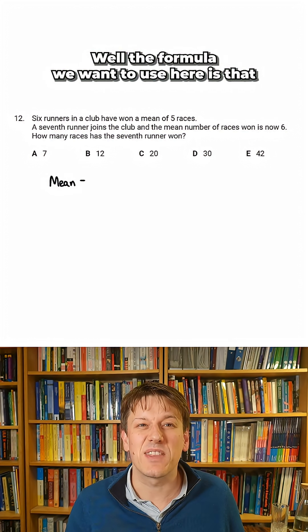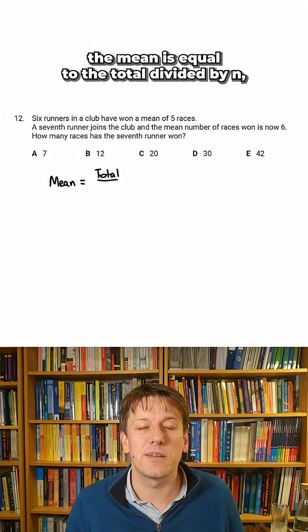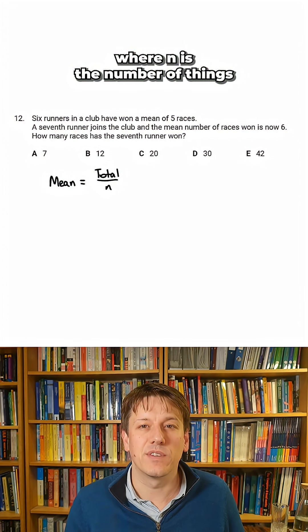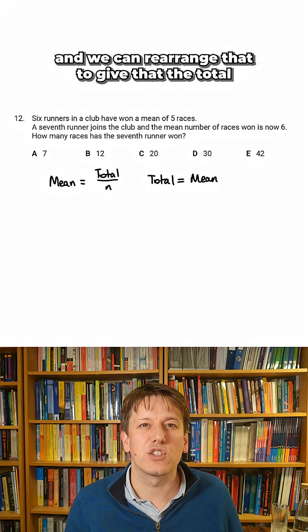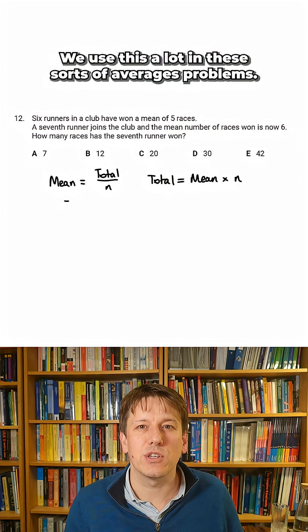Well, the formula we want to use here is that the mean is equal to the total divided by n, where n is the number of things we're taking the mean over, so here it'll be the number of runners, and we can rearrange that to give that the total is equal to the mean times n. We use this a lot in these sorts of averages problems.